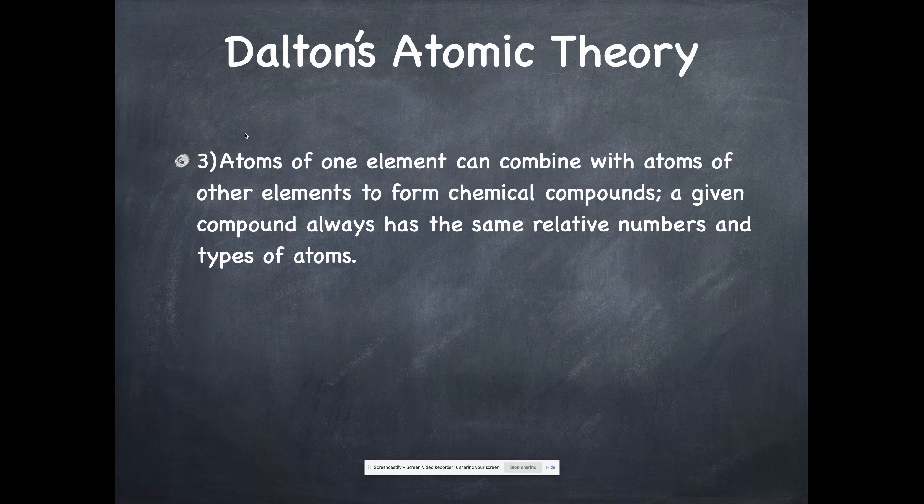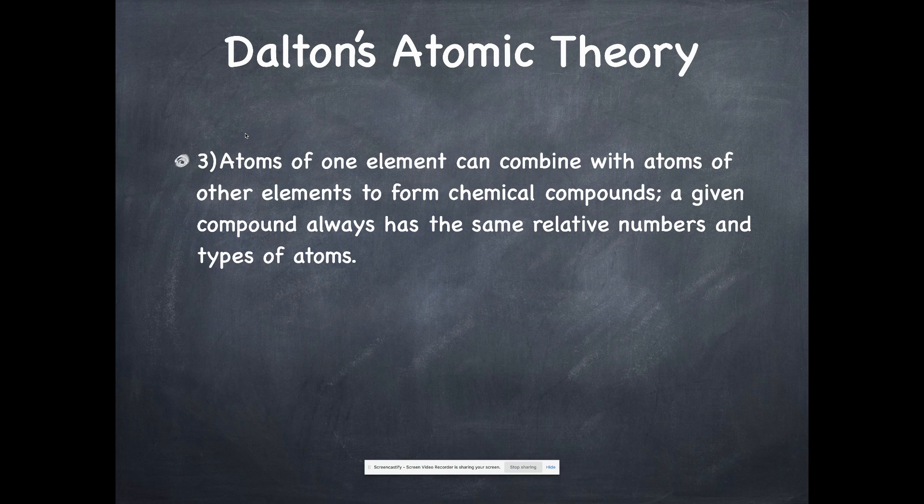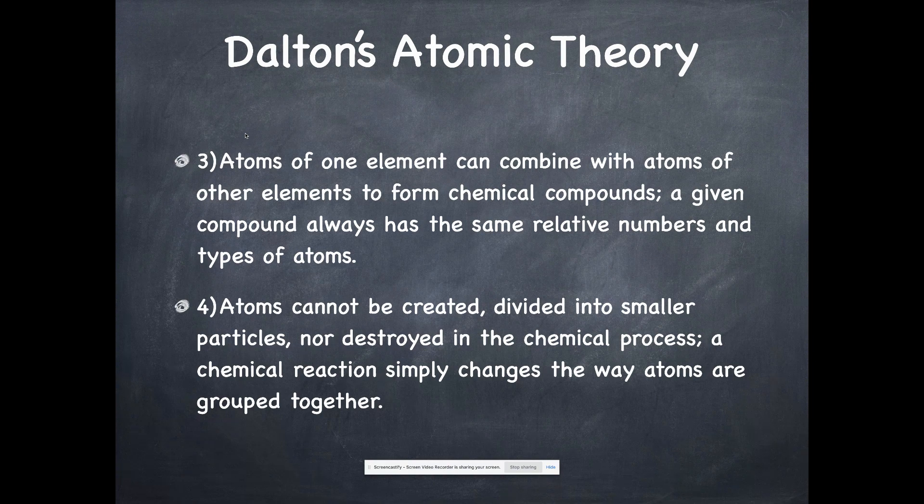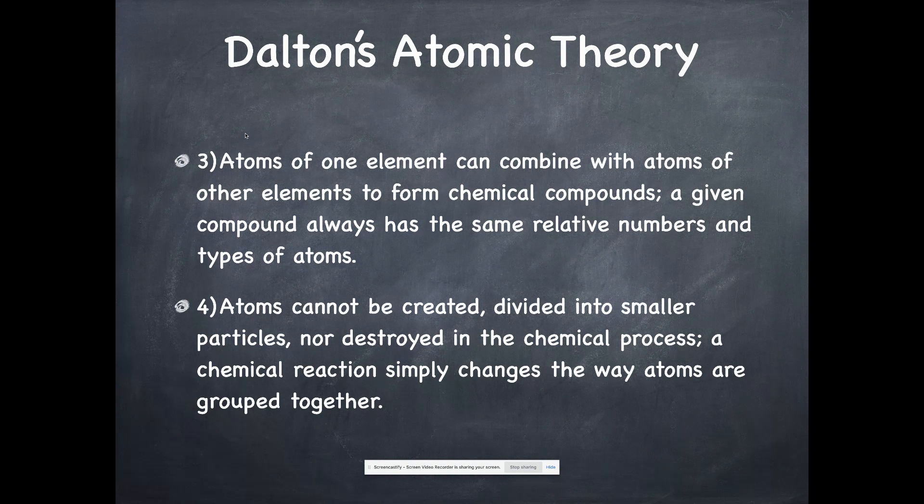Third statement: atoms of one element can combine with atoms of other elements to form chemical compounds, and a given compound always has the same relative numbers and types of atoms in it. That was our whole second unit this year, how to put together different compounds. And then the fourth statement: atoms can't be created or divided into smaller particles or destroyed in a chemical process. A chemical reaction simply changes the way that atoms are grouped together.